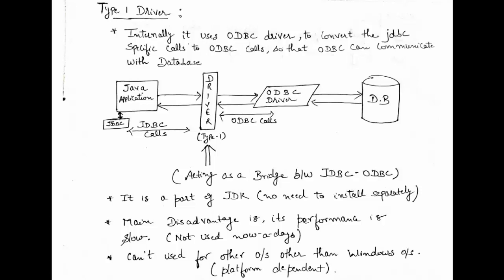A driver acts as a translator that is used to communicate from your Java application to the respective database. If your Java application wants to query certain things from the database, there should be some medium through which the Java application communicates so that the database understands the calls being sent, and vice versa. So the driver is acting as a translator — it converts one specific call into another specific call.